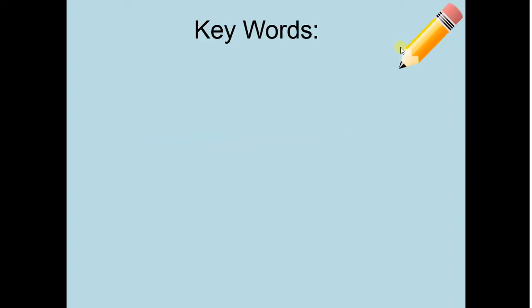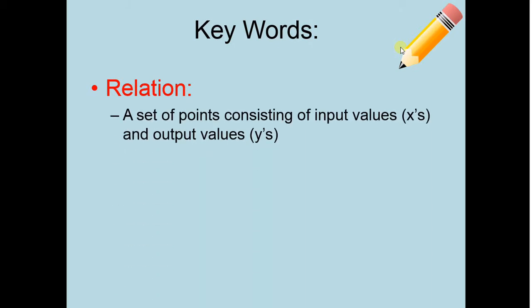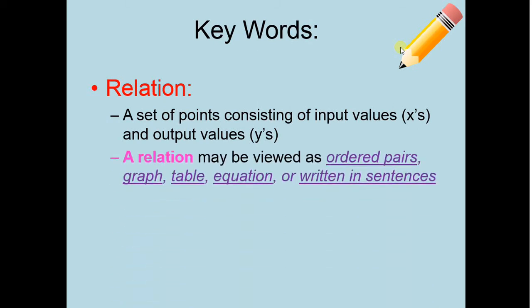So some key words that we're going to be talking about today. The very first one is a relation. A relation is a set of points consisting of input values (x's) and output values (y's). We've seen relations before. They're X and Y's, and what a relation means is that X is related to Y in some fashion. A relation can be viewed as ordered pairs, a graph, a table, an equation, or just written in sentences.